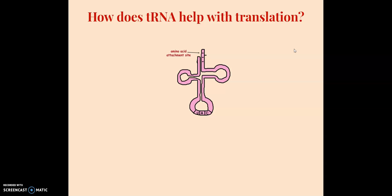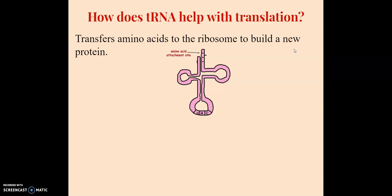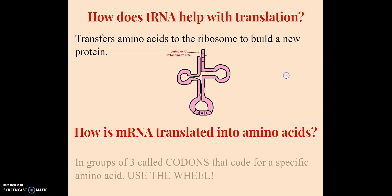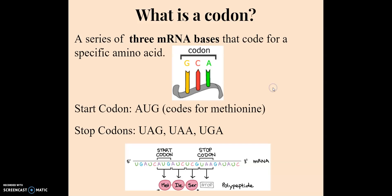So how does tRNA help with translation? It transfers the amino acids to the ribosome to build the new protein. How is the mRNA translated into amino acids? In groups of three called codons. We are looking in groups of three — those groups of three we call codons on the mRNA. On the tRNA we call them anticodons, and those codons code for a specific amino acid, and we use a chart to help us figure out what amino acid each codon codes for.